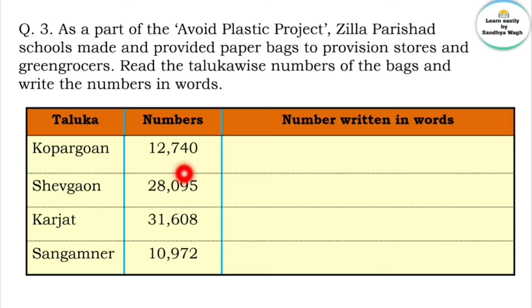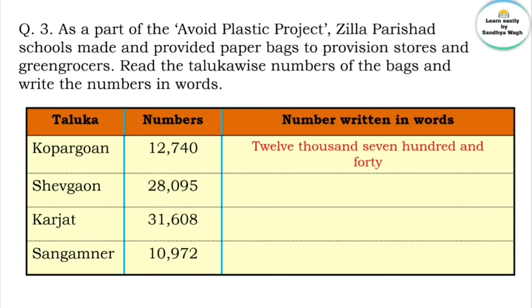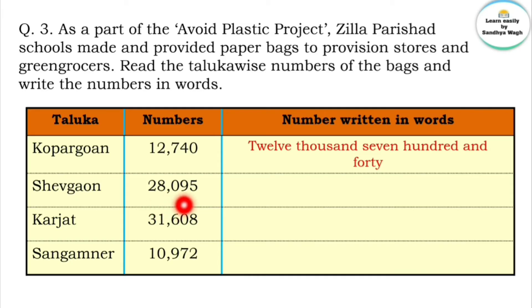The number of bags for the first taluka is 12,740 — twelve thousand seven hundred and forty. For Shivgao taluka, the number of bags is 28,095 — twenty-eight thousand and ninety-five.